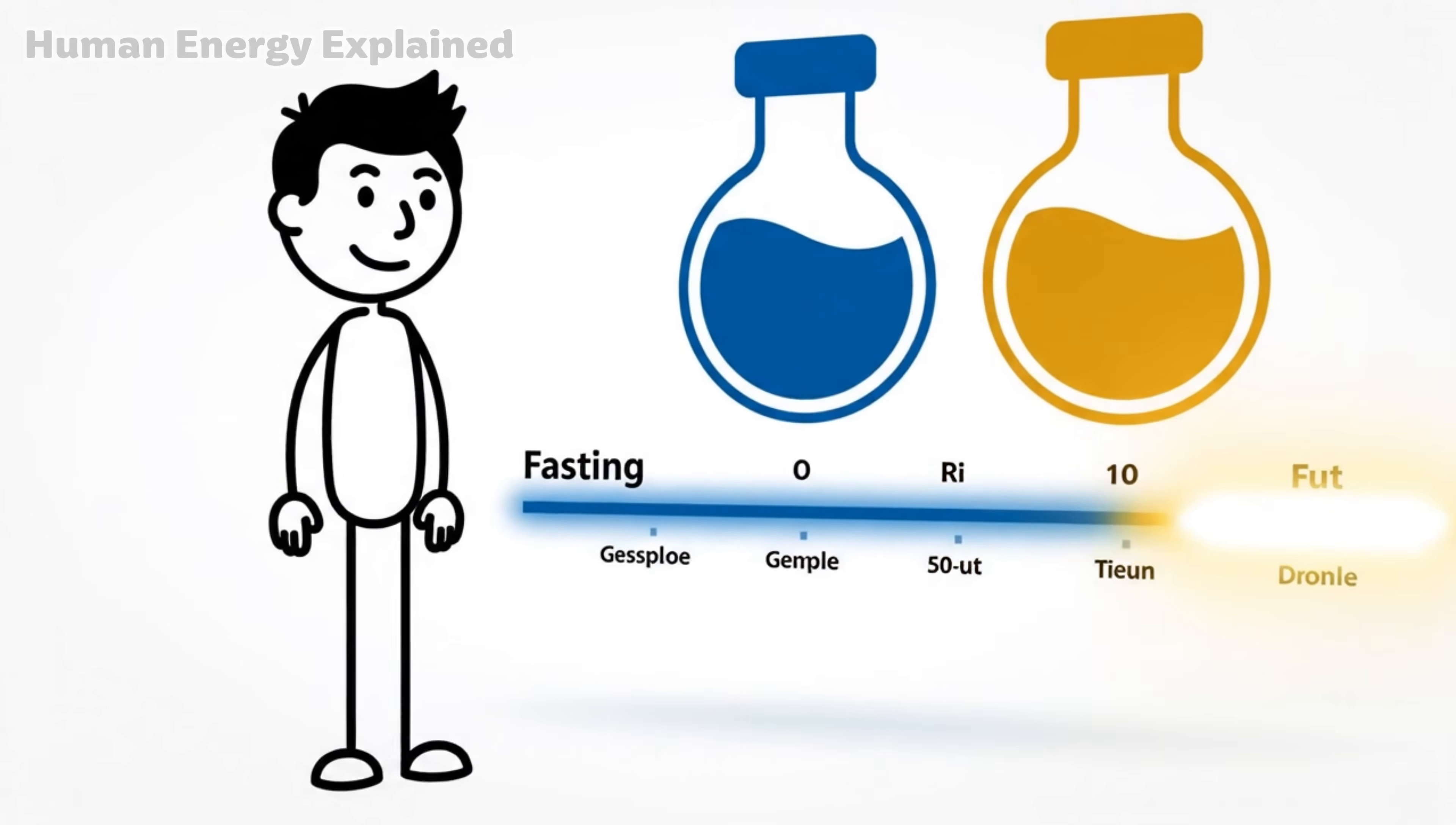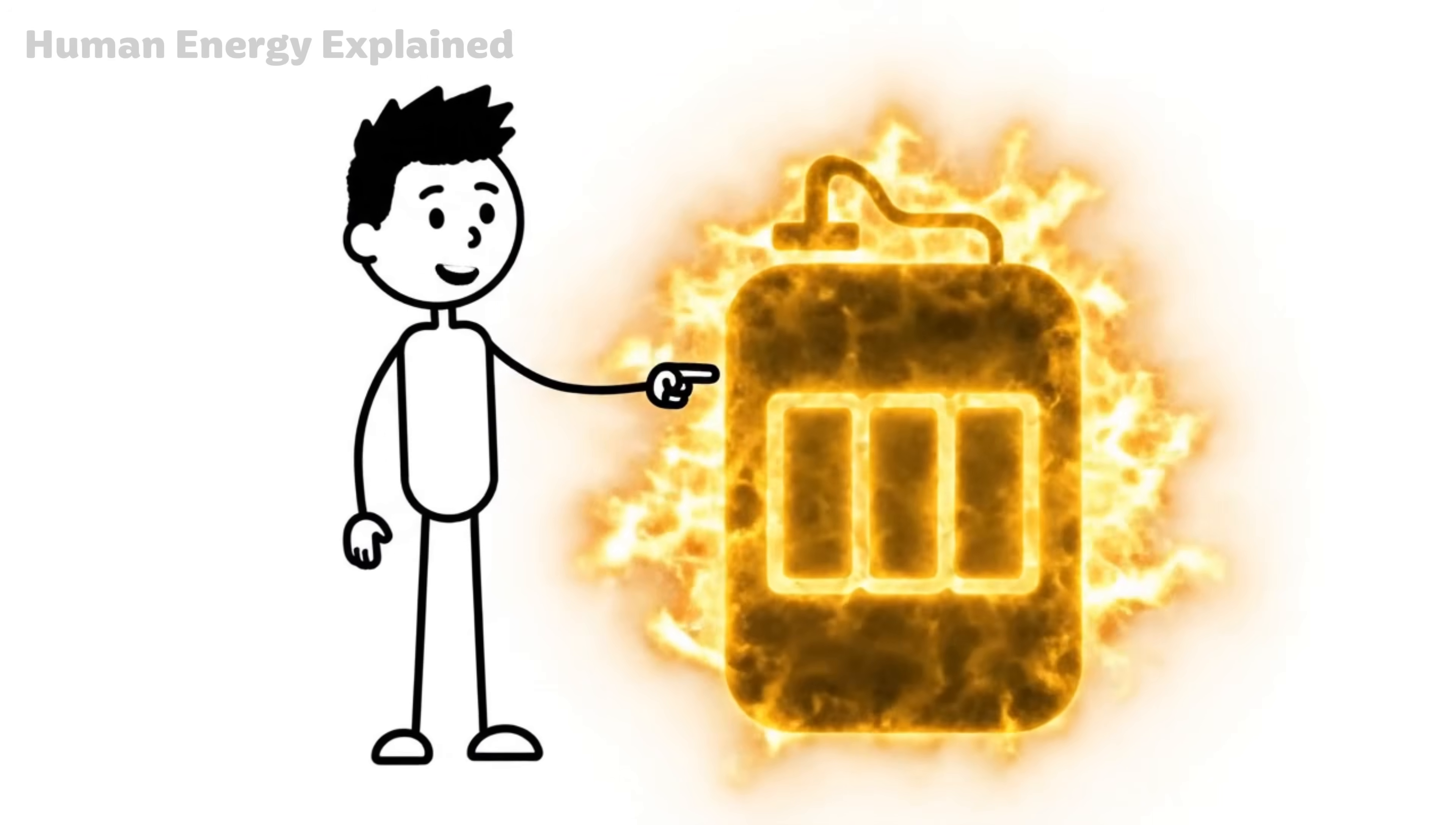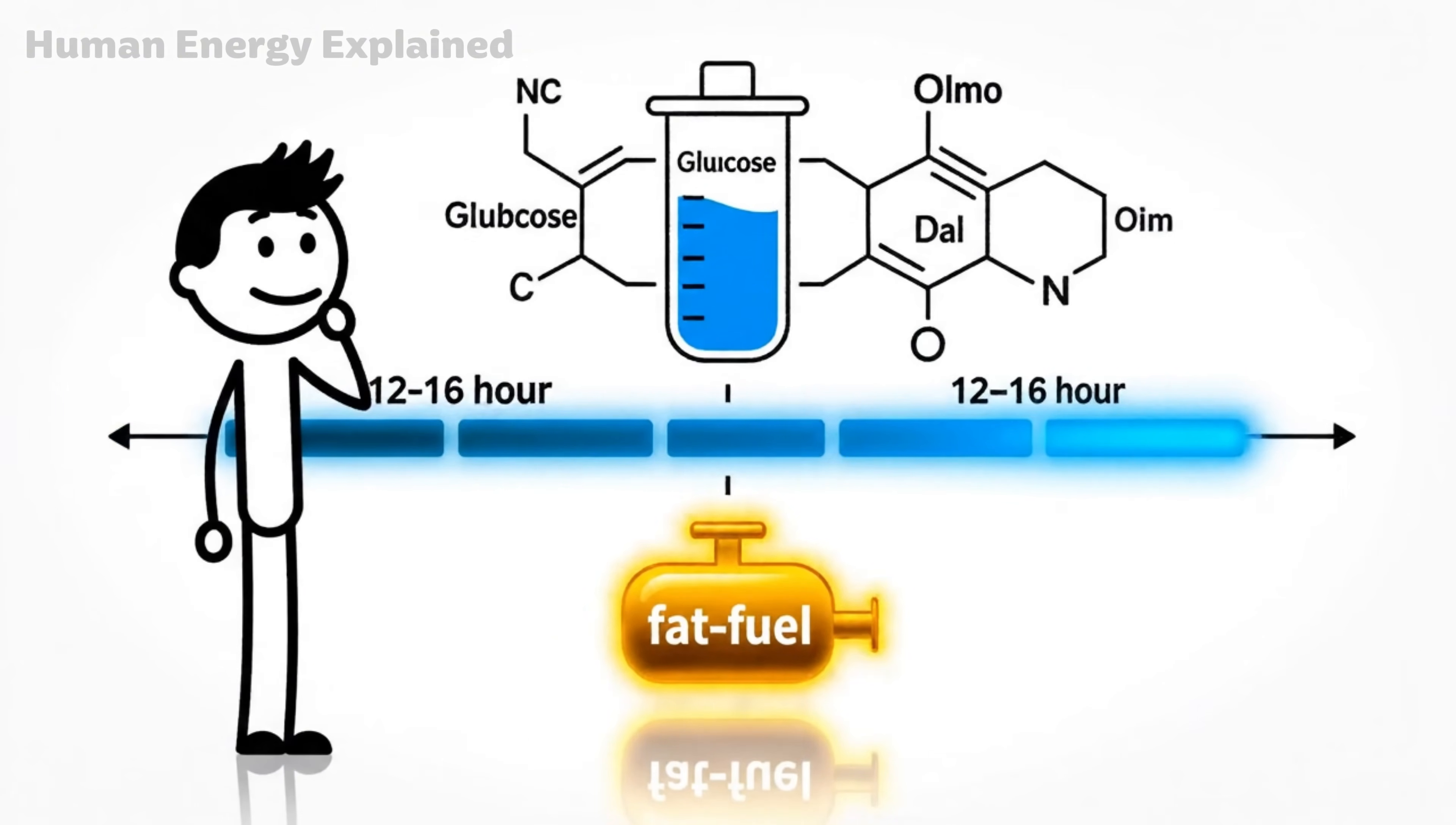Here's how to visualize it. Your body has two fuel tanks. Glucose is like regular gasoline. It's your default fuel, easy to access, burns quickly. Fat is like reserve diesel. It's stored away, takes more effort to access, but there's a lot more of it. Around hour 12 to 16, you run out of regular gas and your engine switches to diesel.